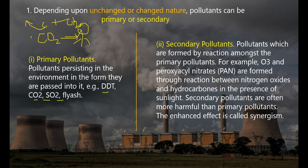The definition of primary pollutants: these are pollutants persisting in the environment in the form they are passed into it. That is the primary pollutants in the environment.